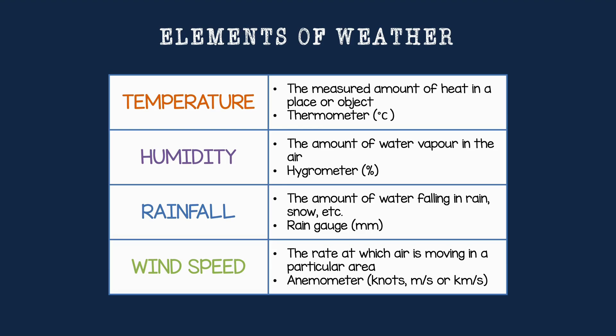Humidity is the amount of water vapor in the air, and this is measured with a hygrometer in percentage. If you've been to Johannesburg, you know it's not very humid — in winter, all of our hands and lips get very dry. Whereas a place like Durban is much more humid, as tropical places usually have a very high humidity, because there are differing amounts of water vapor in the air.